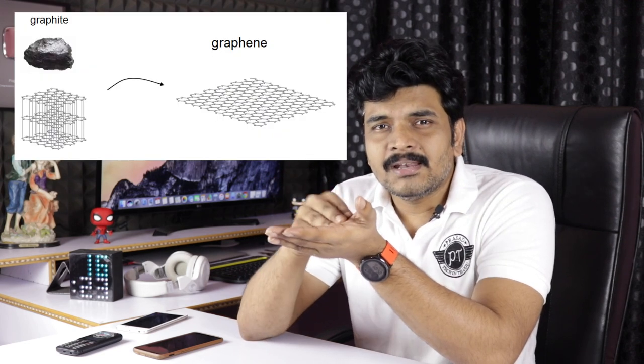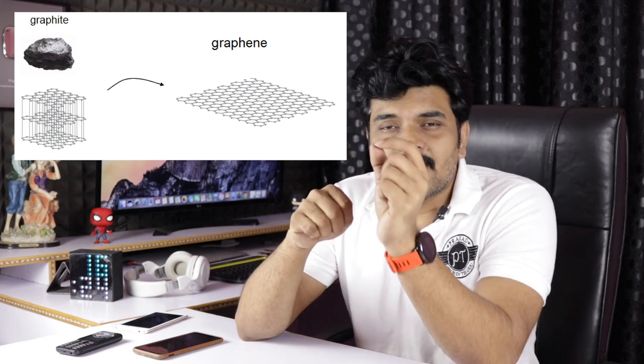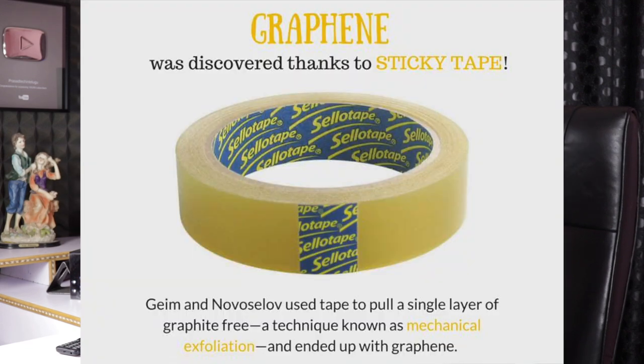Graphene is a single small layer. In 2003–2004, researchers used cello tape to take a layer of graphene and identify the individual carbon atoms within it.